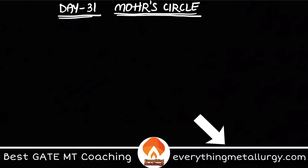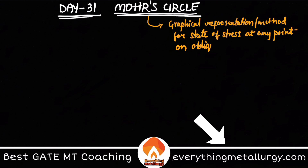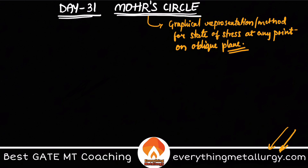Mohr's Circle is basically a graphical method for representing the state of stress at any point on a plane — usually we call it an oblique plane. So Mohr's Circle is nothing but taking the values of stress at any particular point in a material and representing it in a graphical manner, which gives you a circle. I'm not going to cover the derivation here; if you want the full derivation you can go through our full course at everythingmetallurgy.com.